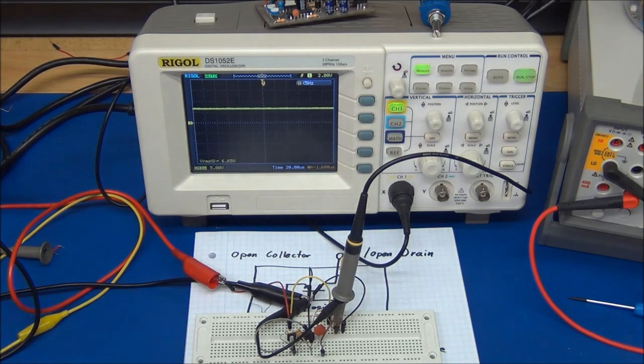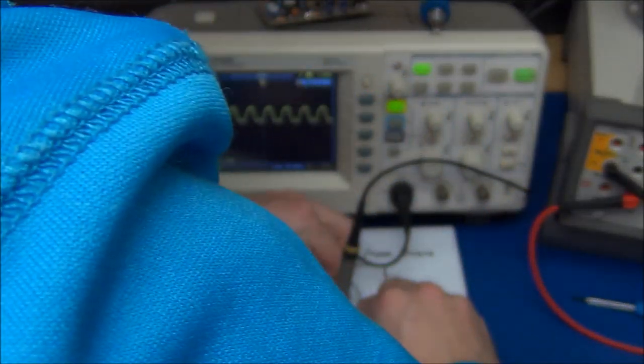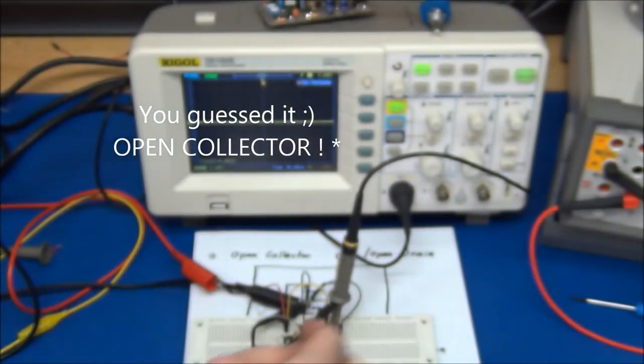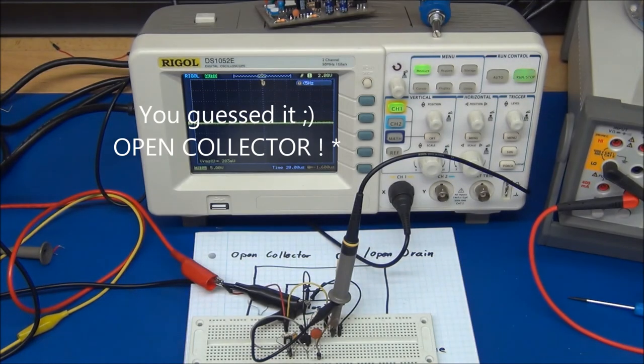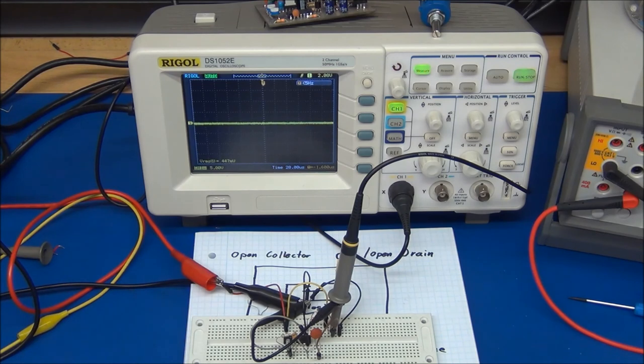On the other hand, if we were using an open emitter output, the voltage will always stay at the ground level, because there's no way the chip can raise the charge on the capacitor.